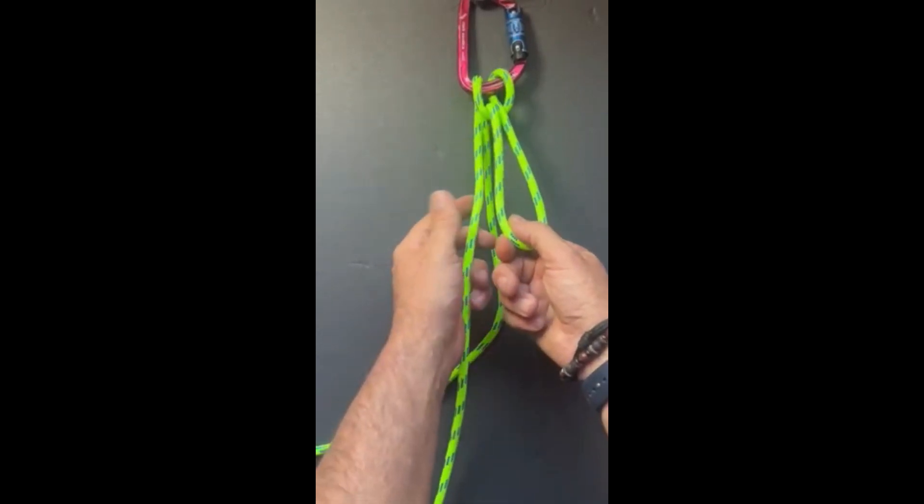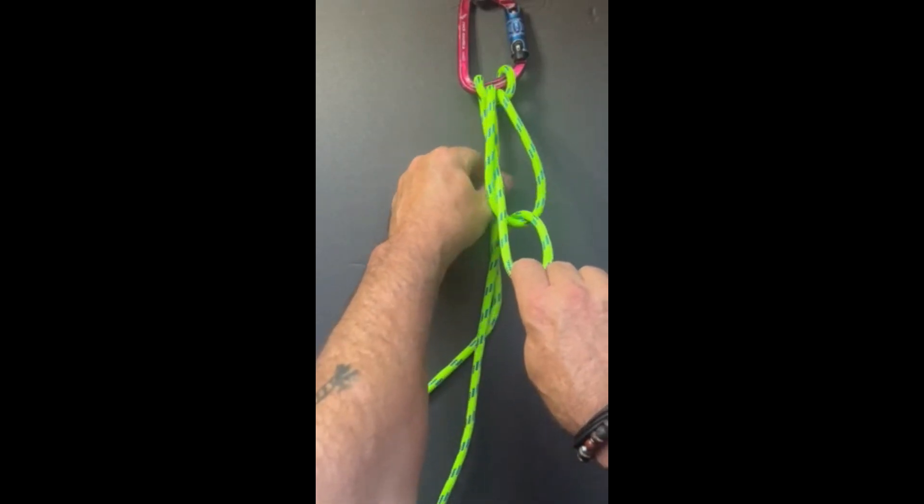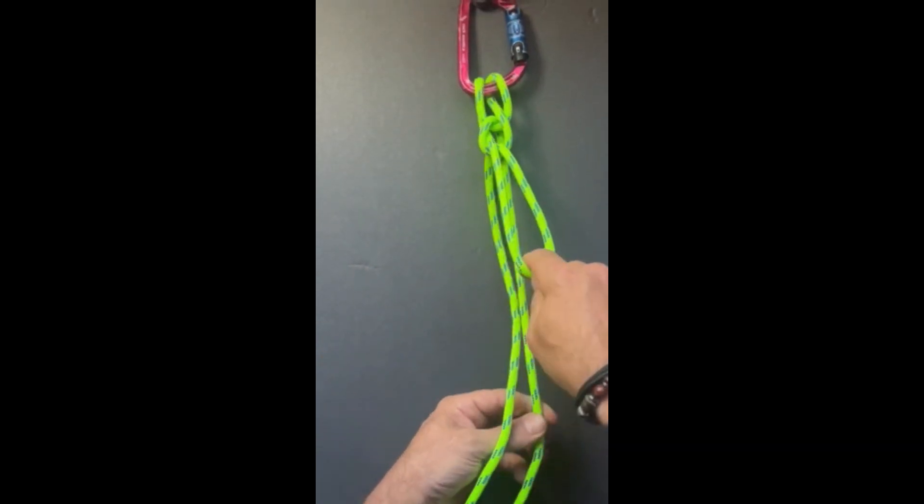Now, that strand that you pulled tight, bring it up through that bite and pull the other strand. You can see how it bunches up tight.